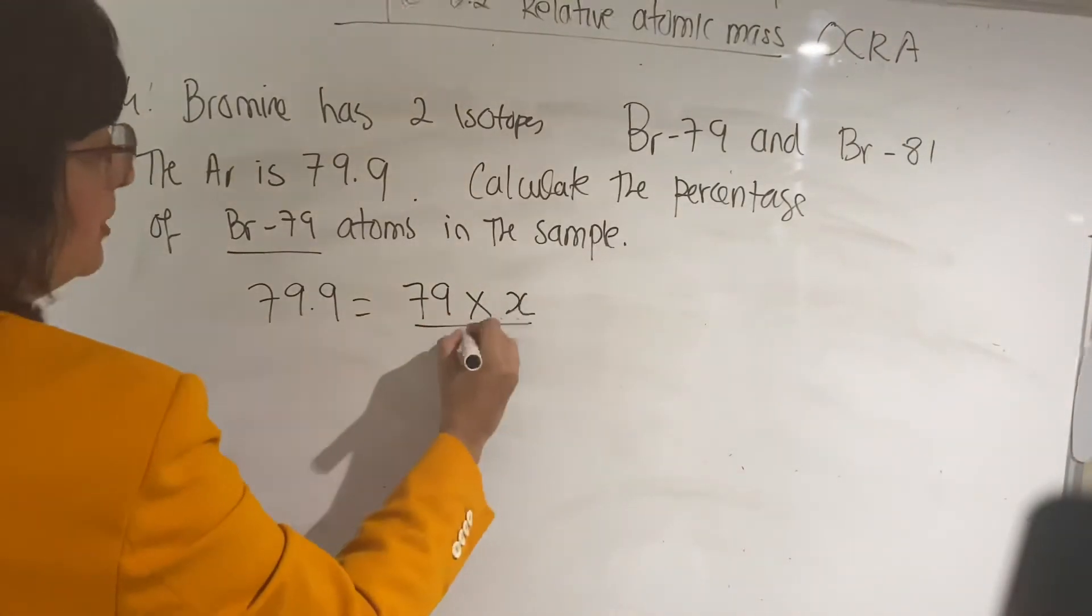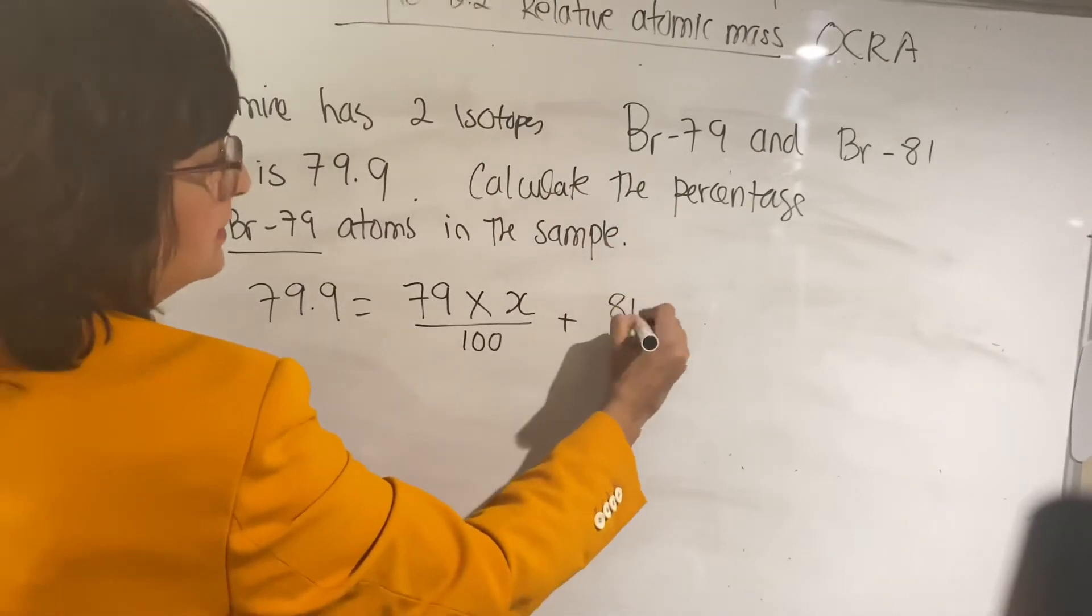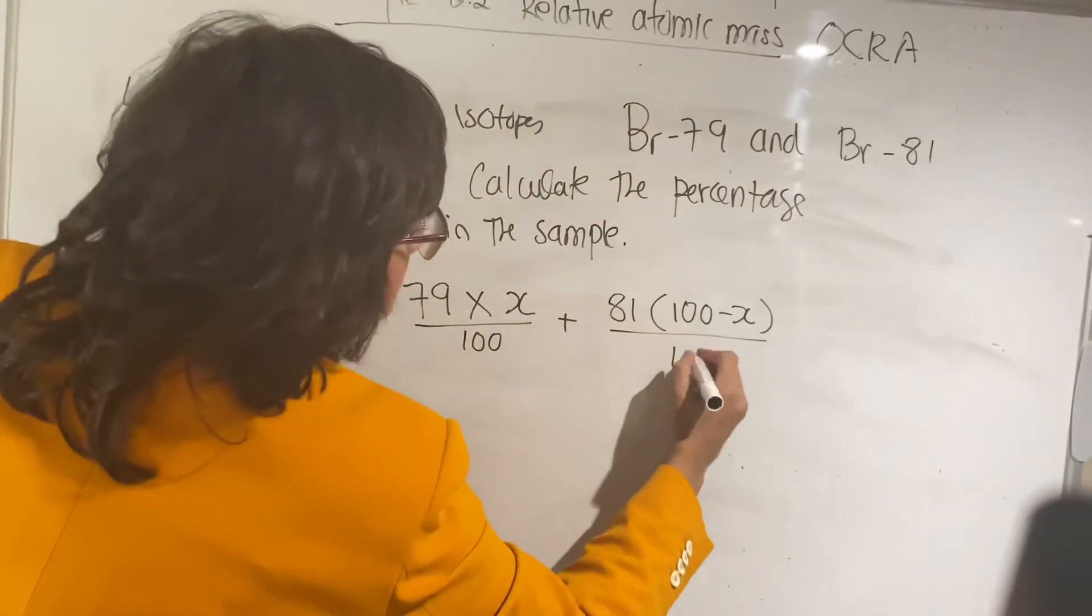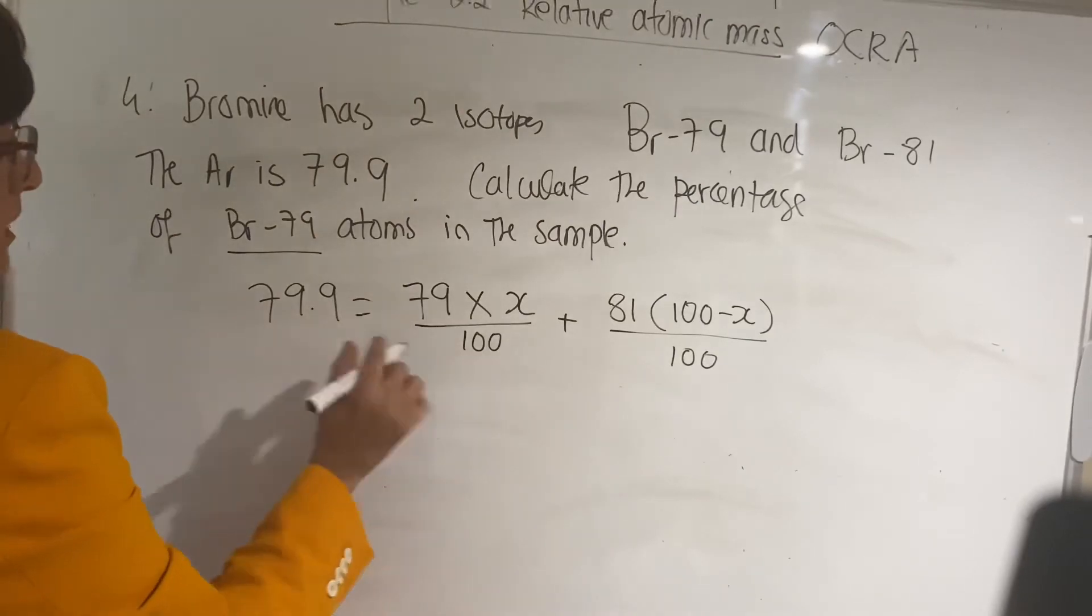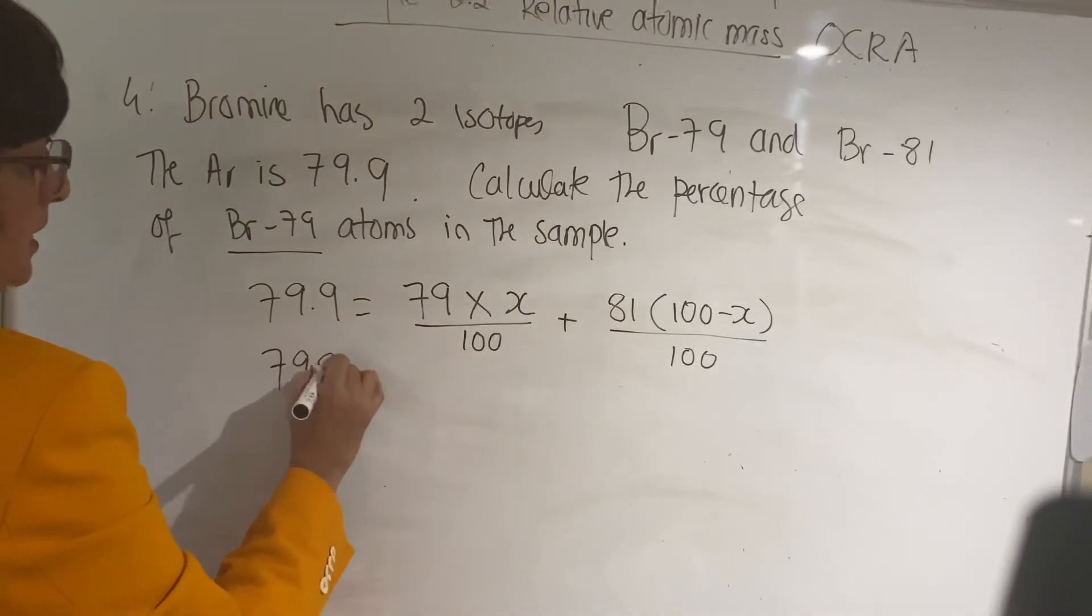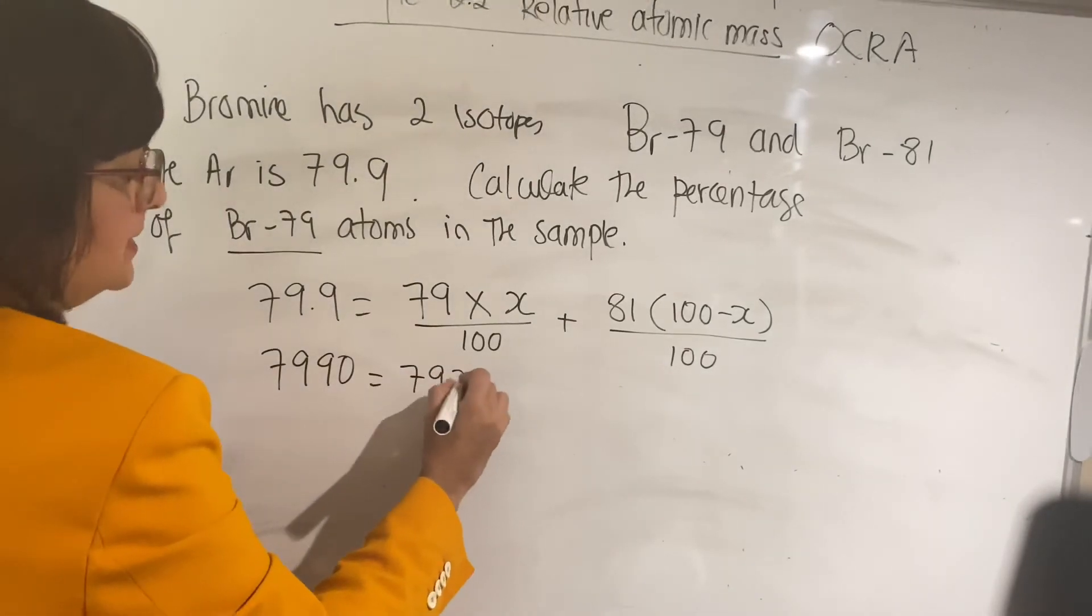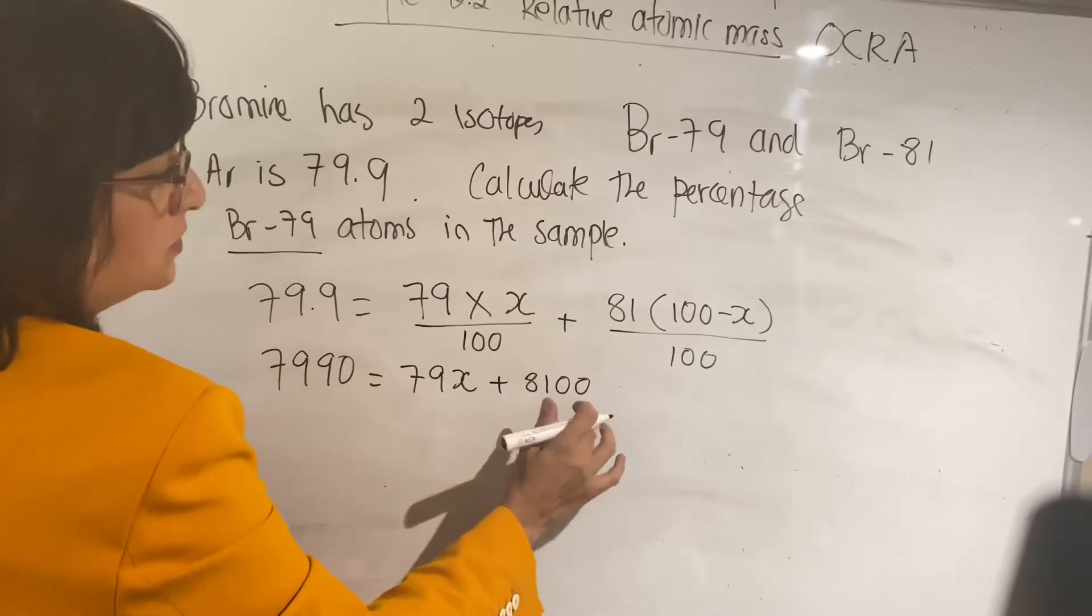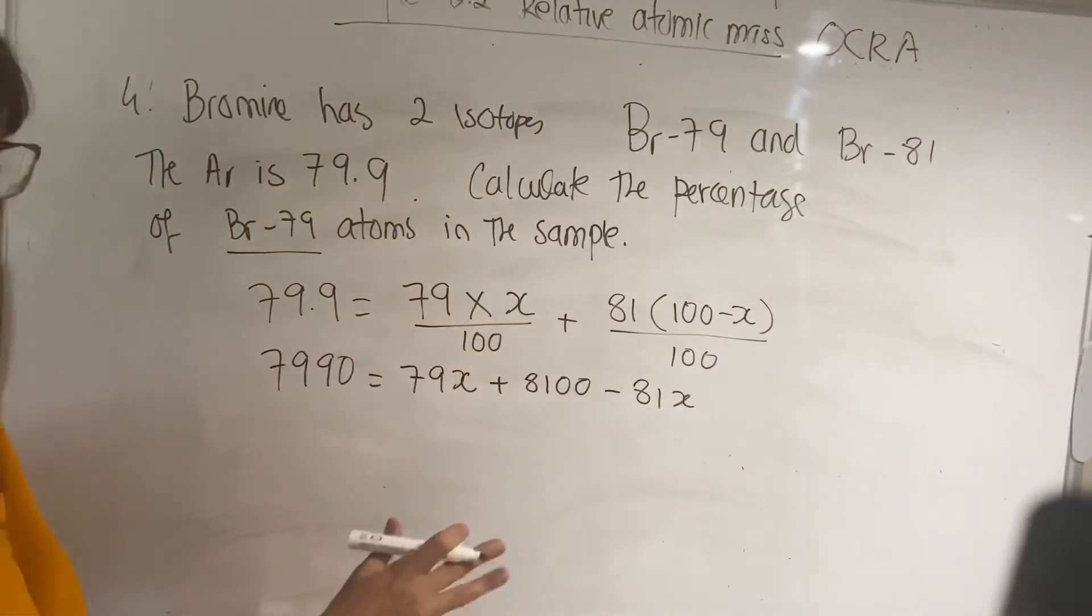We start by putting the relative atomic mass is 79.9 equals to the isotope 79 times x, because we don't know that, divided by 100, plus the isotope 81 times 100 minus x divided by 100.